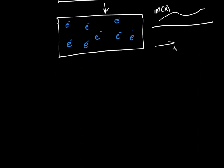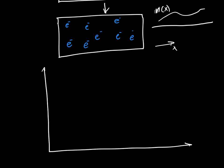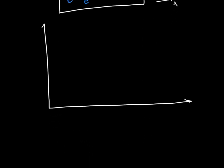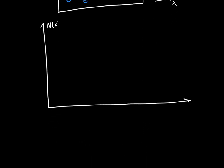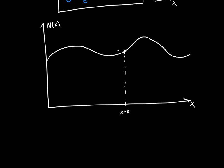Let's say we've got some arbitrary electron distribution. I'm going to use the number of electrons instead of the concentration, because it's less confusing. It can look like whatever you want. Let's say we're interested in a certain point — call this x equals zero. At x equals zero, there's going to be a certain concentration. And this location is x equals plus or minus delta x — here, x equals minus delta x.